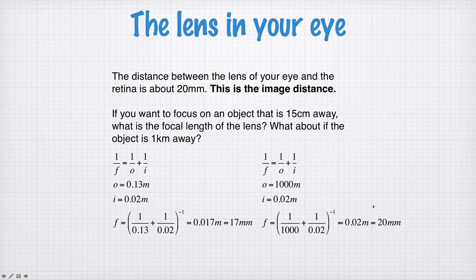In this case, the object distance is essentially infinity, which means the image is formed at the focal length. So the image distance of 20mm equals the focal length of 20mm.